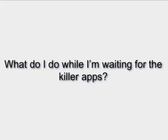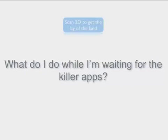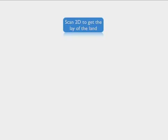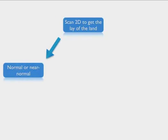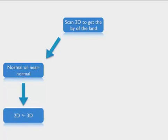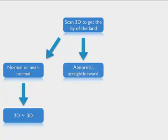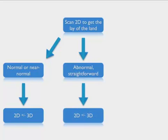So what do I do while I'm waiting for the killer applications? I start by scanning in two dimensions to get the lay of the land. In most cases, certainly if it's a normal or near-normal scan, we just scan in 2D, maybe 3D to get some nice pictures if we want to, but we generally don't need it. If it's abnormal but straightforward, pretty much the same thing — stick with 2D, maybe add 3D if we really want to. But it's not necessary, for example, to use 3D ultrasound to diagnose gallstones.